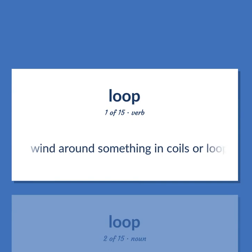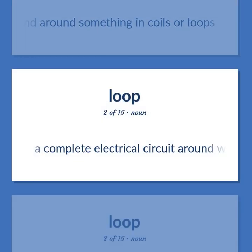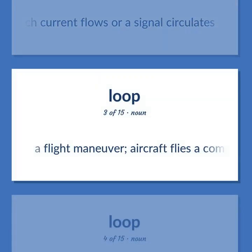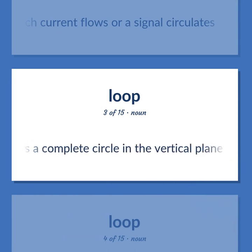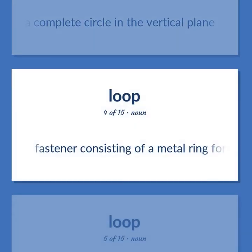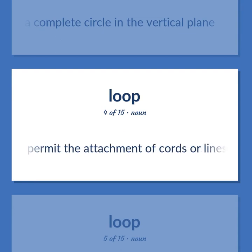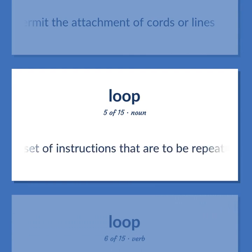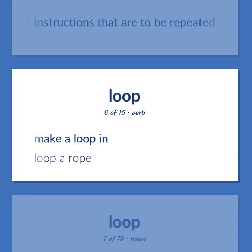LOOP: Wind around something in coils or loops. A complete electrical circuit around which current flows or a signal circulates. A flight maneuver where an aircraft flies a complete circle in the vertical plane. A fastener consisting of a metal ring for lining a small hole to permit the attachment of cords or lines. In computer science, a single execution of a set of instructions that are to be repeated. Make a loop in; loop a rope.